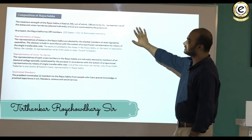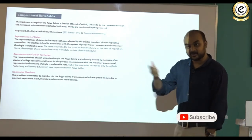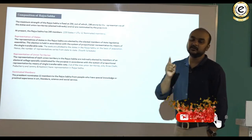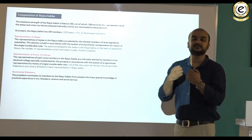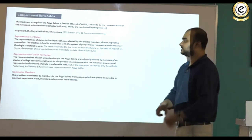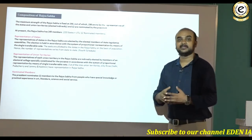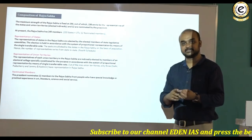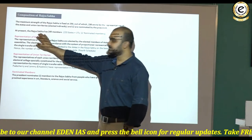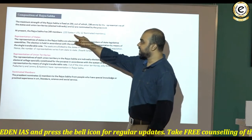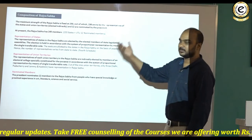Out of the 250 maximum, 238 are representatives of the states and union territories, indirectly elected in accordance with the system of proportional representation by means of single transferable vote — very similar to the election methodology used for electing the president and vice president of India. Twelve are nominated by the president from among people with distinctive achievements in fields like science, art, literature, and social service. At present, the Rajya Sabha strength is 245: 233 from states and union territories, and 12 nominated members.